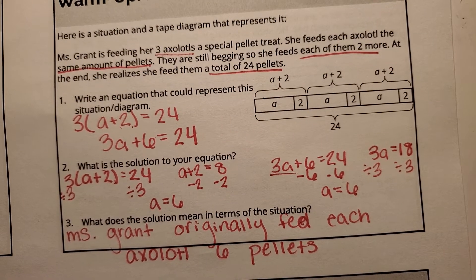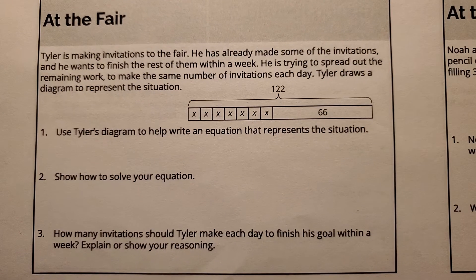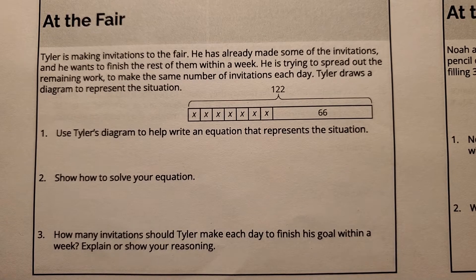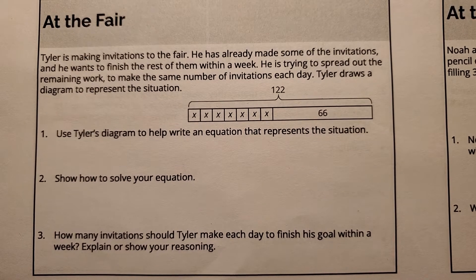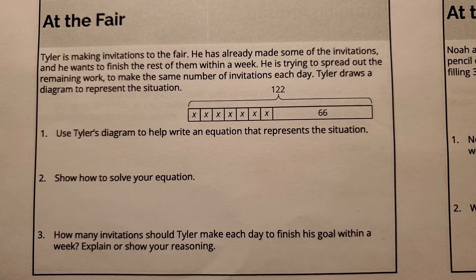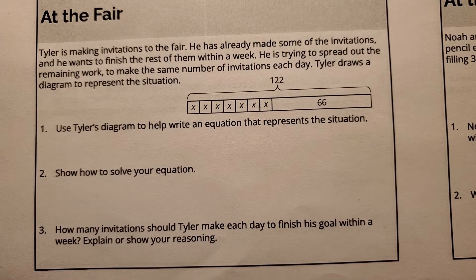Let's move on to our actual tasks for the day. Our first task is 'At the Fair,' and we're talking about Tyler. Tyler is making invitations to the fair. He has already made some of the invitations, and he wants to finish the rest within a week — seven days — spreading out the remaining work to make the same number each day. He draws a tape diagram to represent the situation. Write an equation, solve it, and determine how many invitations Tyler should make each day. Pause here and try these problems.